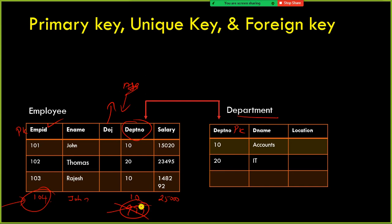Suppose the department number has some value 'triple nine' but the corresponding value is not available in the department table. Later if you want to find the list of employees working in all departments, that employee will show up but no one will know which department they belong to. To avoid this kind of anomaly, we create the foreign key constraint — whatever values exist in the primary key column of the parent table, only those same values should be in the foreign key column, though duplicates are allowed.